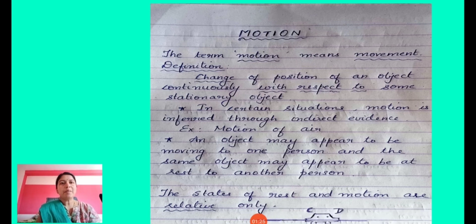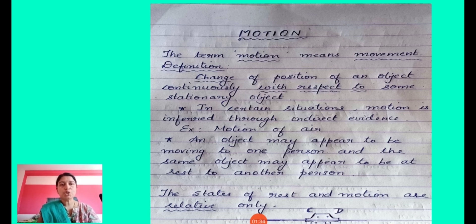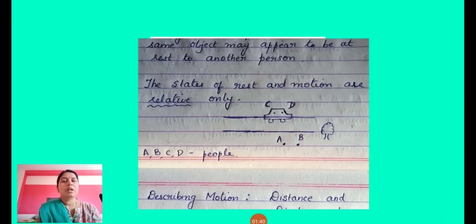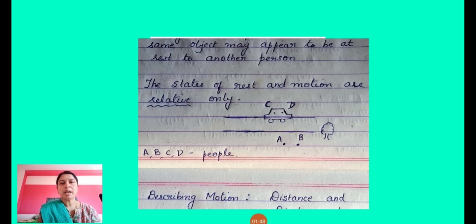When we talk about motion, an object may appear to be moving to one person and the same object may appear to be at rest to another person. Let us take a simple example to understand this. In this diagram there are four people A, B, C and D. A and B are just standing at the side of a road, and C and D are inside a car which is moving.